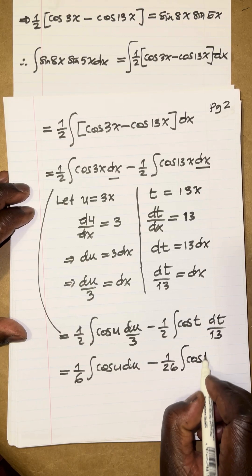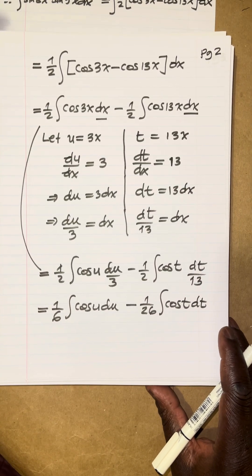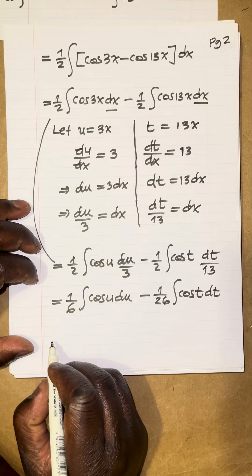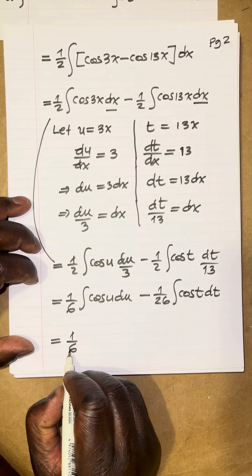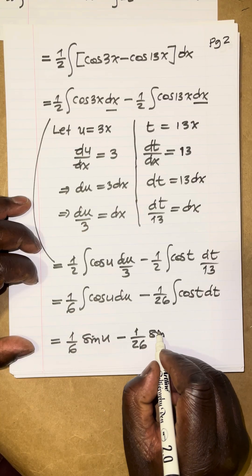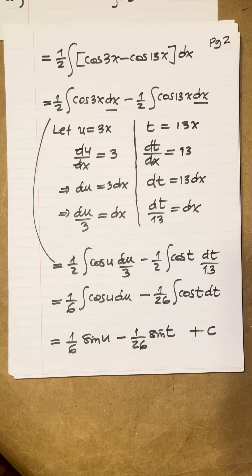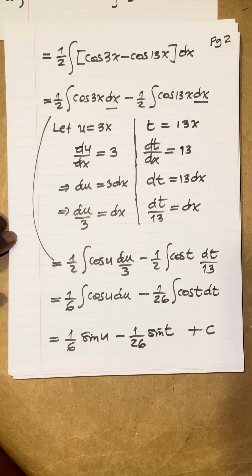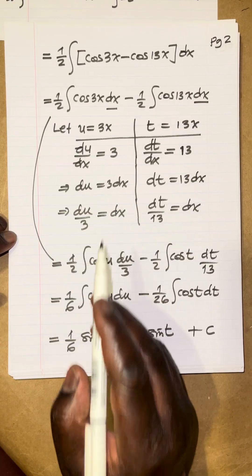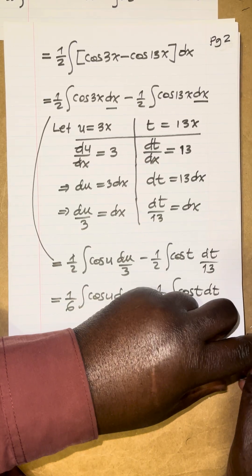The integral of cosine is sine, so this equals one-sixth sine u minus one over 26 sine t, plus C, because this is an indefinite integral with no limits of integration. Now we revert back to the original variable using the relationships u equals 3x and t equals 13x, substituting 3x and 13x back in.